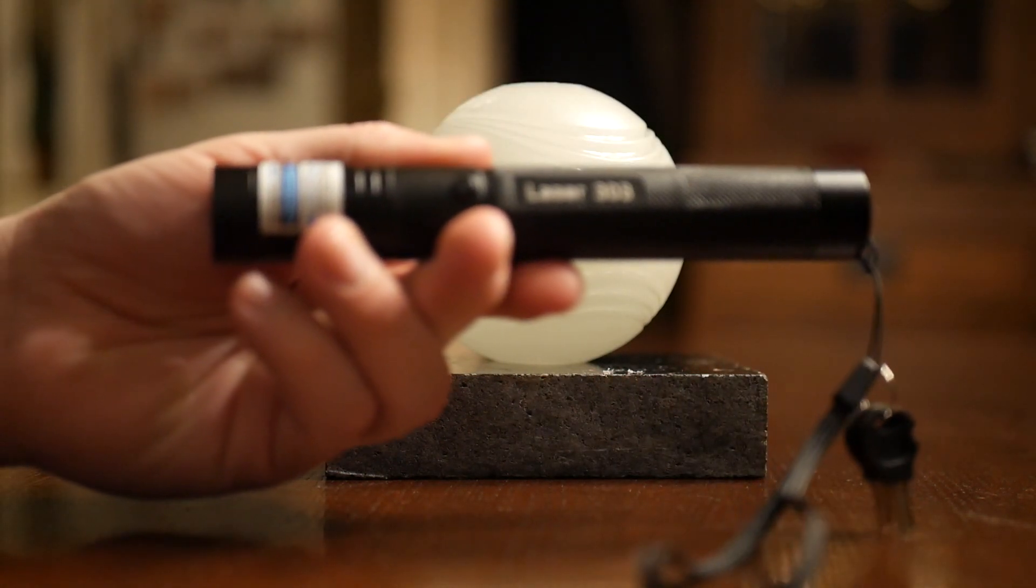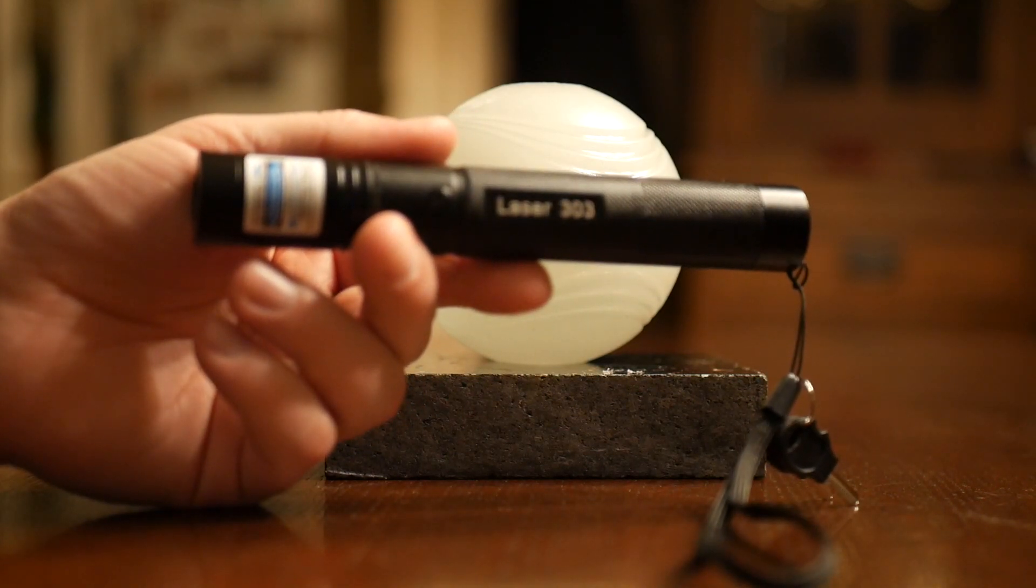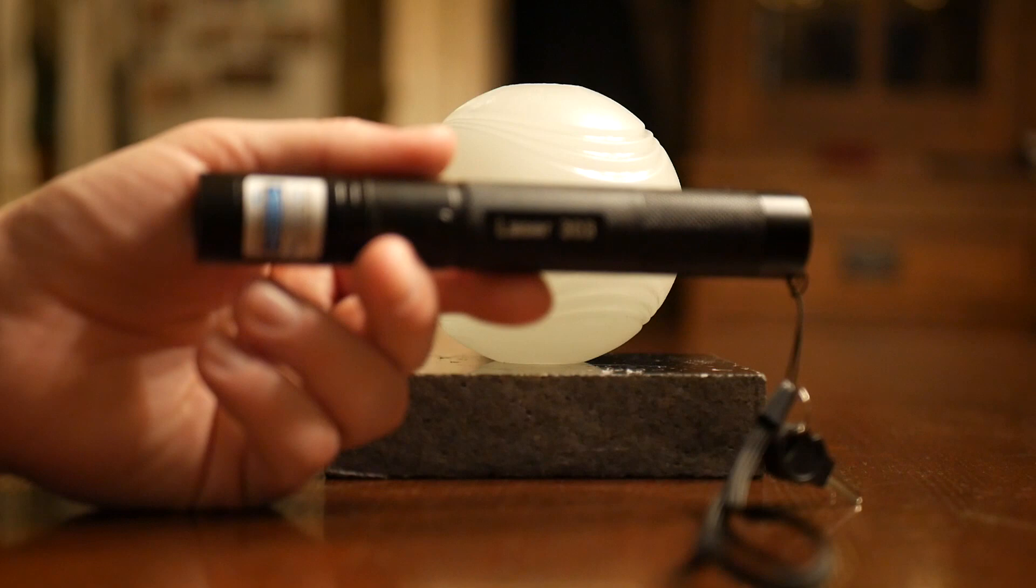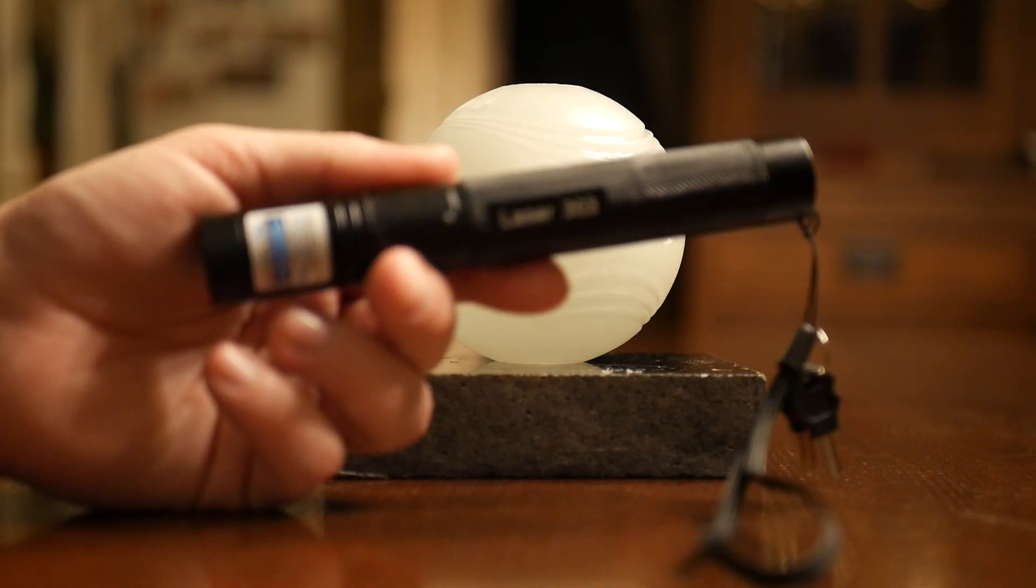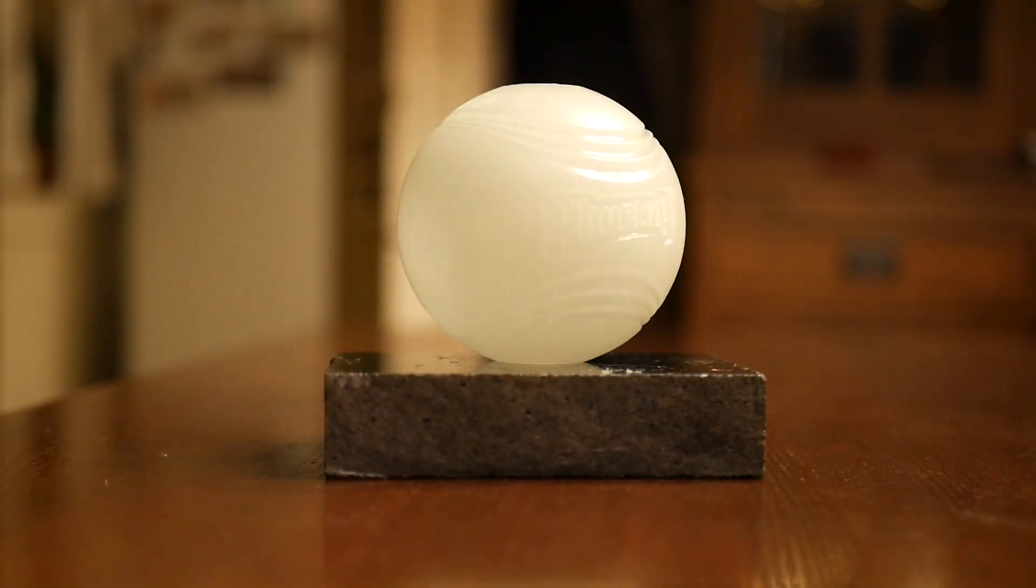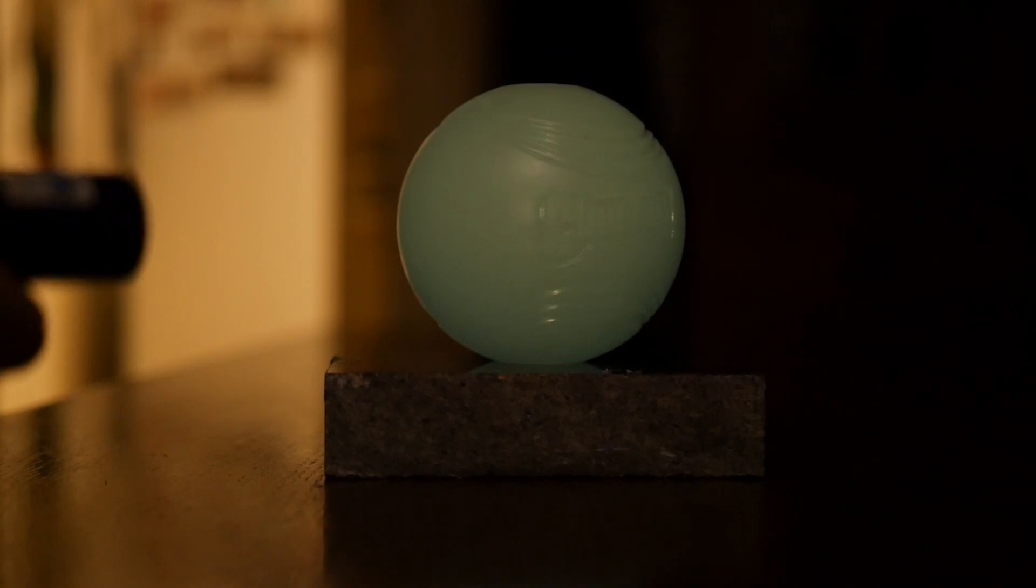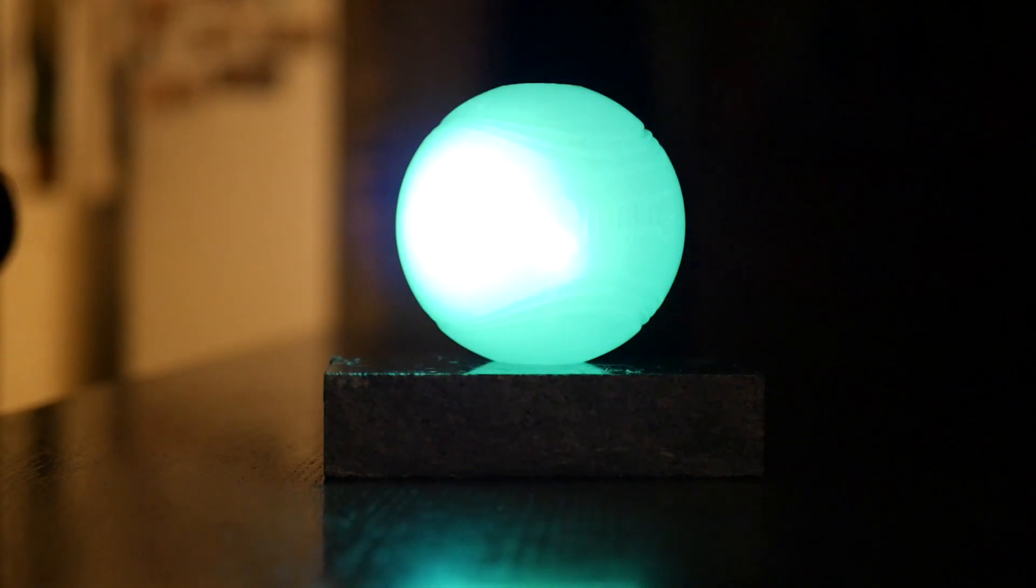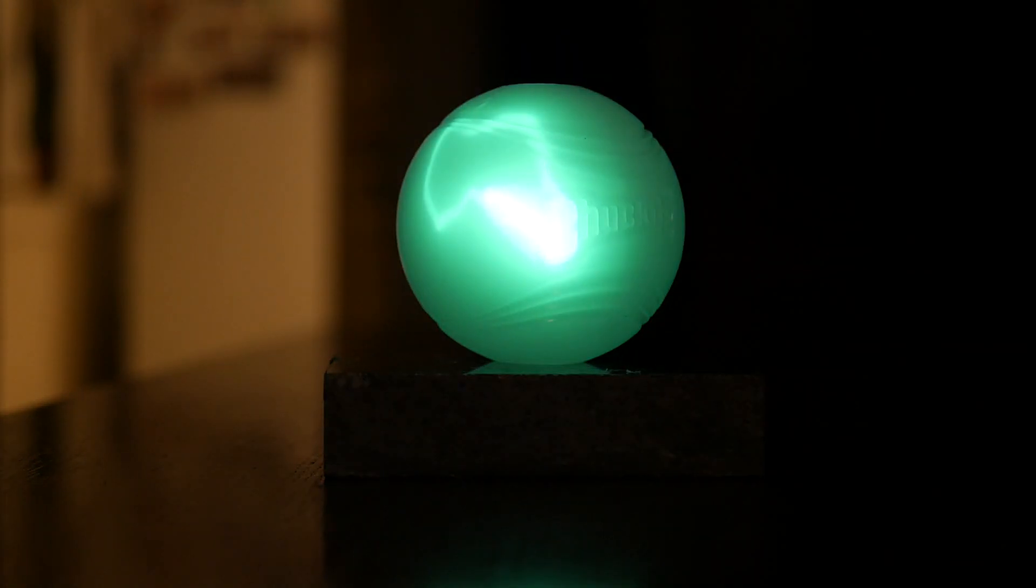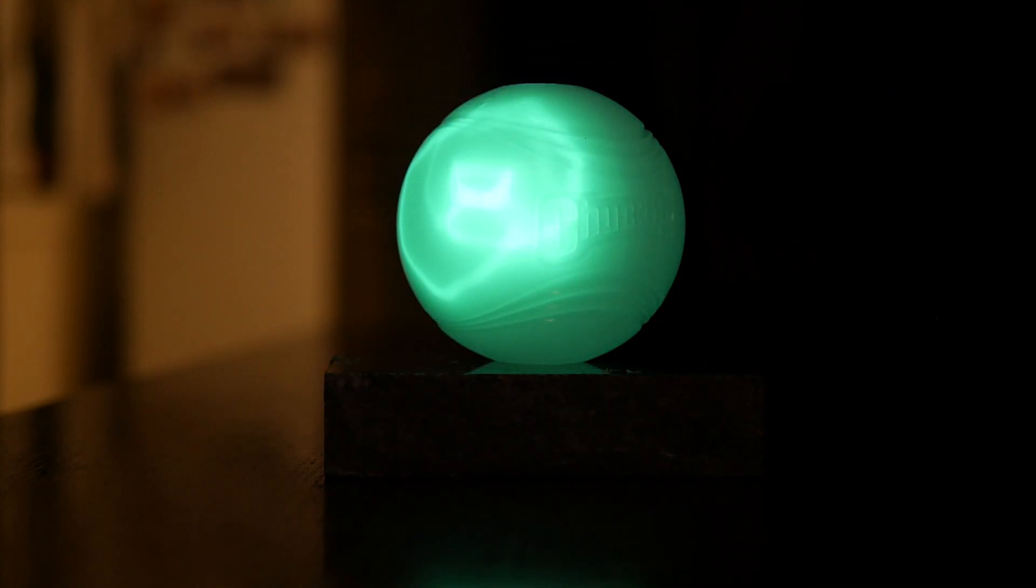I'm going to start off using this 405 nanometer purple Laser 303, about 50 milliwatts in power. What you're going to find is that if you have a glow-in-the-dark item like this ball that hasn't been charged up yet, you can shine your laser at it and it will actually charge up the item. You're going to see I'm able to draw little lines on this ball because the laser itself is able to charge up the item, similar to how sunlight or a strong light in your house would.